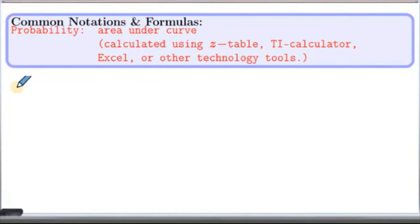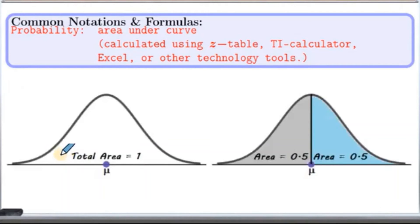Here finding probability involves finding area under the curve. For that we use z-table or some technology like TI calculator or Excel. Here the area under the graph should be 1.